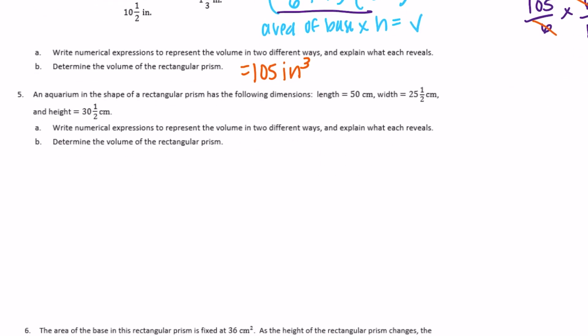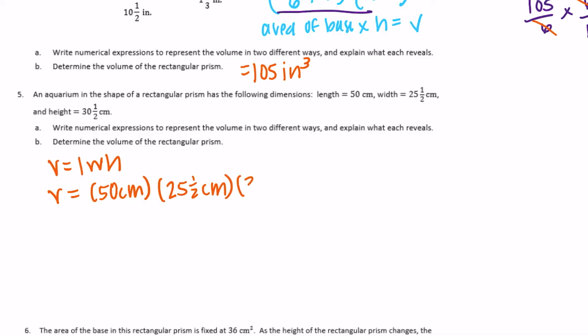Number 5: an aquarium in the shape of a rectangular prism has length 50 centimeters, width 25 and a half centimeters, and height 30 and a half centimeters. Write numerical expressions in two different ways and explain what each reveals. First way: volume equals 50 cm × 25.5 cm × 30.5 cm. Second way: volume equals area of the base times the height.